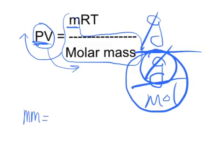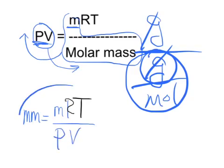Molar mass in grams per mole equals mass in grams times the ideal gas constant times temperature, divided by pressure and divided by volume.